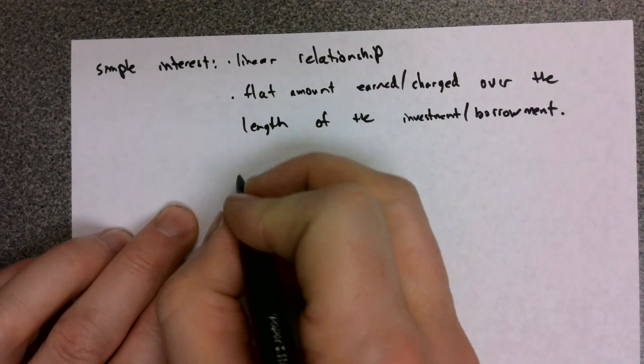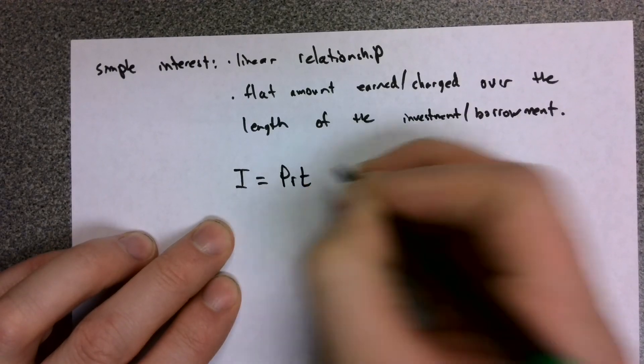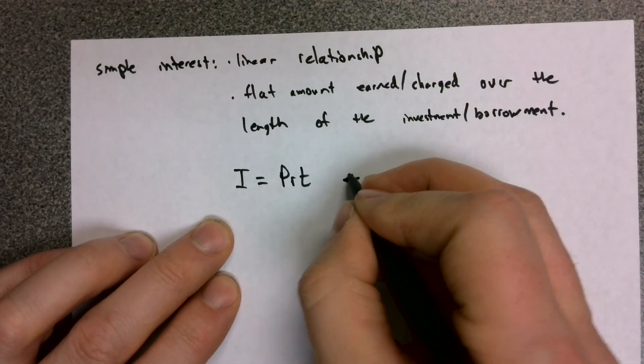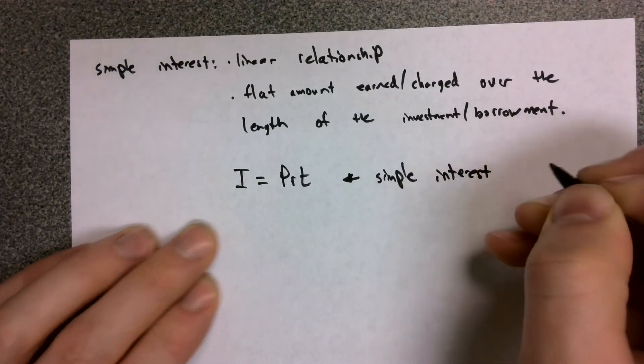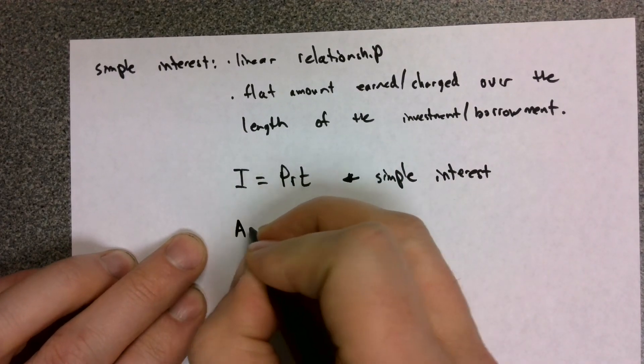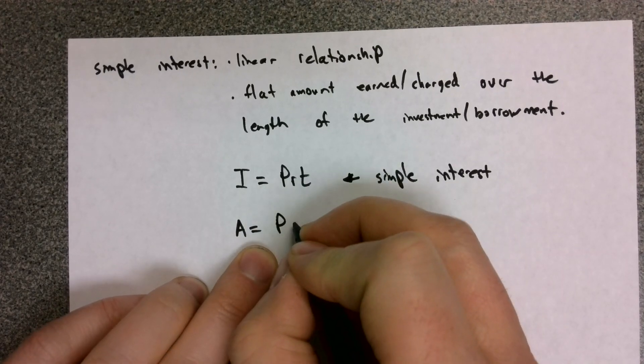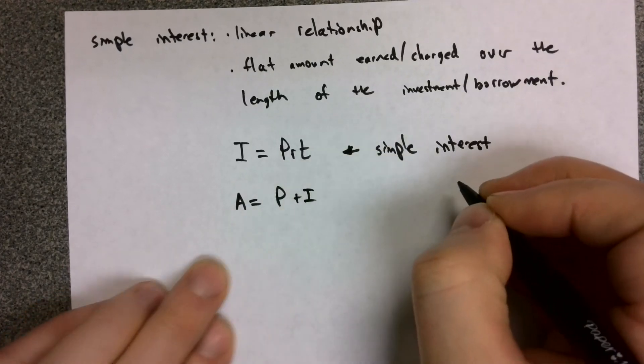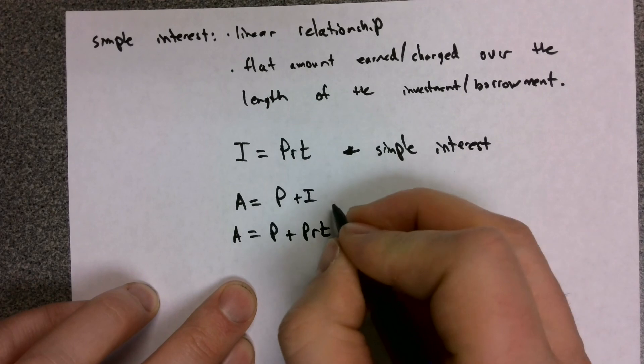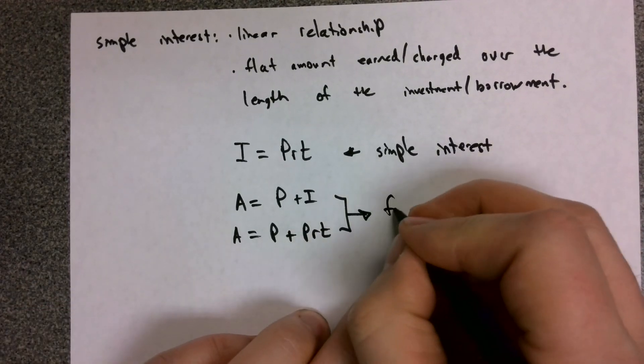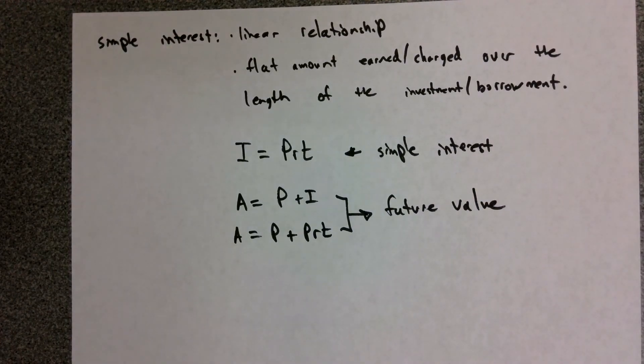There are three formulas. Really, only two formulas that we need. The first one is the interest formula. This calculates the amount of simple interest earned based on the rate and the principle. And the second one is the two versions of the future value formula. So the future value is equal to the principle plus the interest. And then if we just insert the formula above in for interest, we get the principle plus the PRT. These together are ways to calculate the future value of an investment or the future cost if we were doing borrowing.